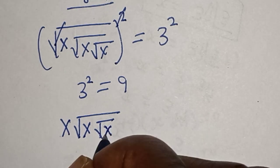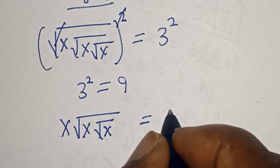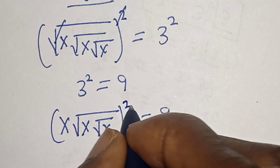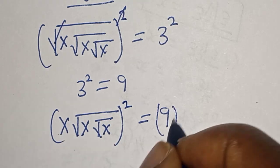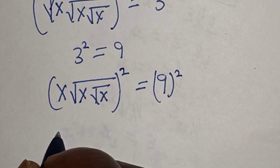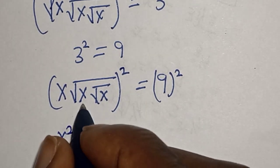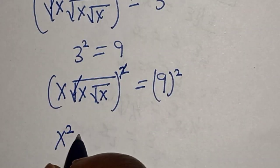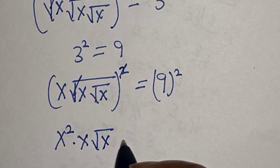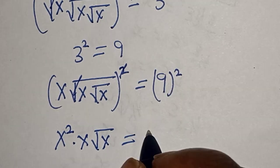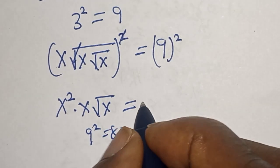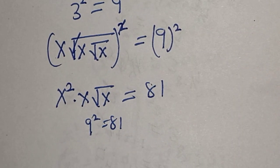Now let's square both sides again. Then x squared — this one will cancel — giving us x times square root of x is equal to 9 squared. 9 squared is 81, so this is 81.